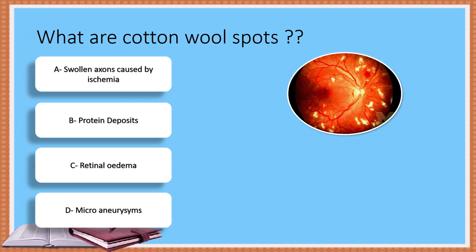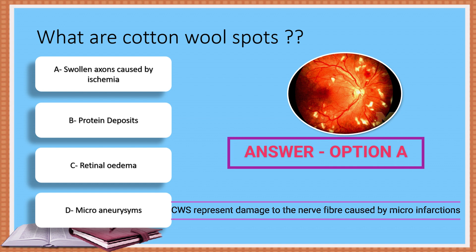Question number 1: What are cotton wool spots? Option A: Swollen axons caused by ischemia. Option B: Protein deposits. Option C: Retinal edema. Option D: Microaneurysms. The correct answer is Option A. Cotton wool spots represent damage to the nerve fiber caused by microinfarctions.